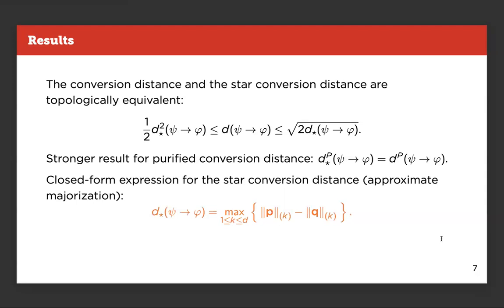We stick with the one defined with the trace distance, because we were able to find a closed form expression for it. So, this is actually quite interesting, because as I said in the previous slide, it's usually quite difficult to do the minimization, but thinking about only pure states and defining the star conversion distance in a good way, we were able to find a closed form expression for the star conversion distance.